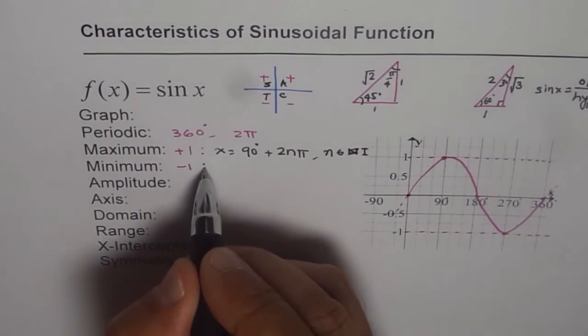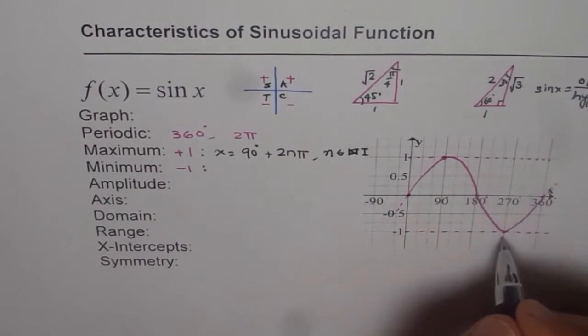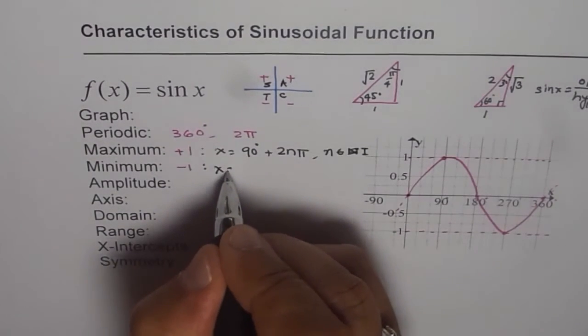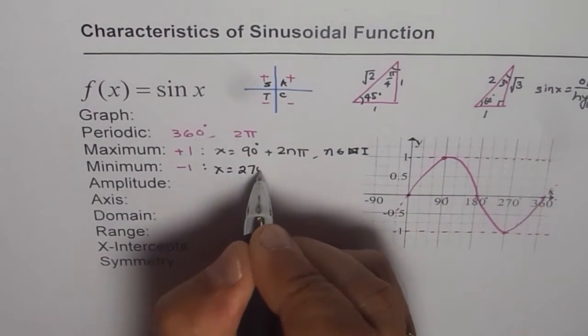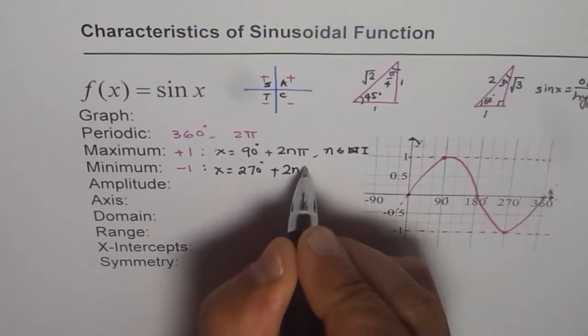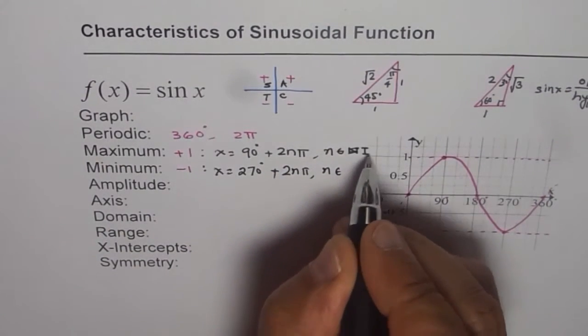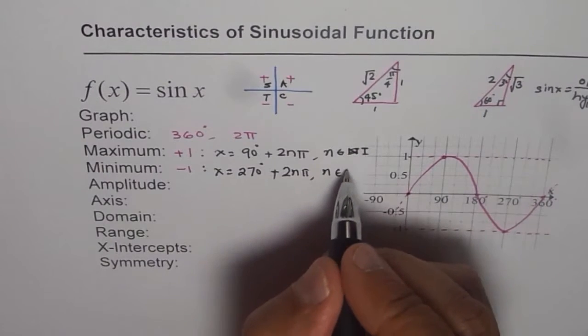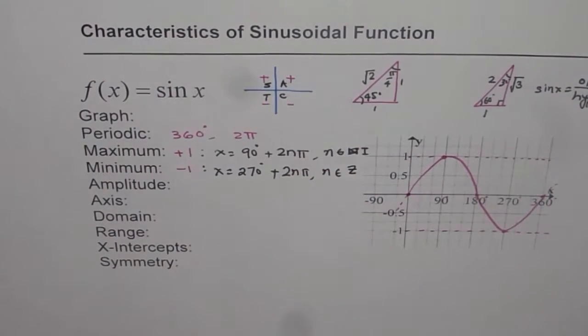Now when does it have negative values? So negative values are at 270. So we can write x equals to 270 degrees plus it repeats after 2nπ. So where n belongs to integers, which you can write as i or as z. Both are integers.